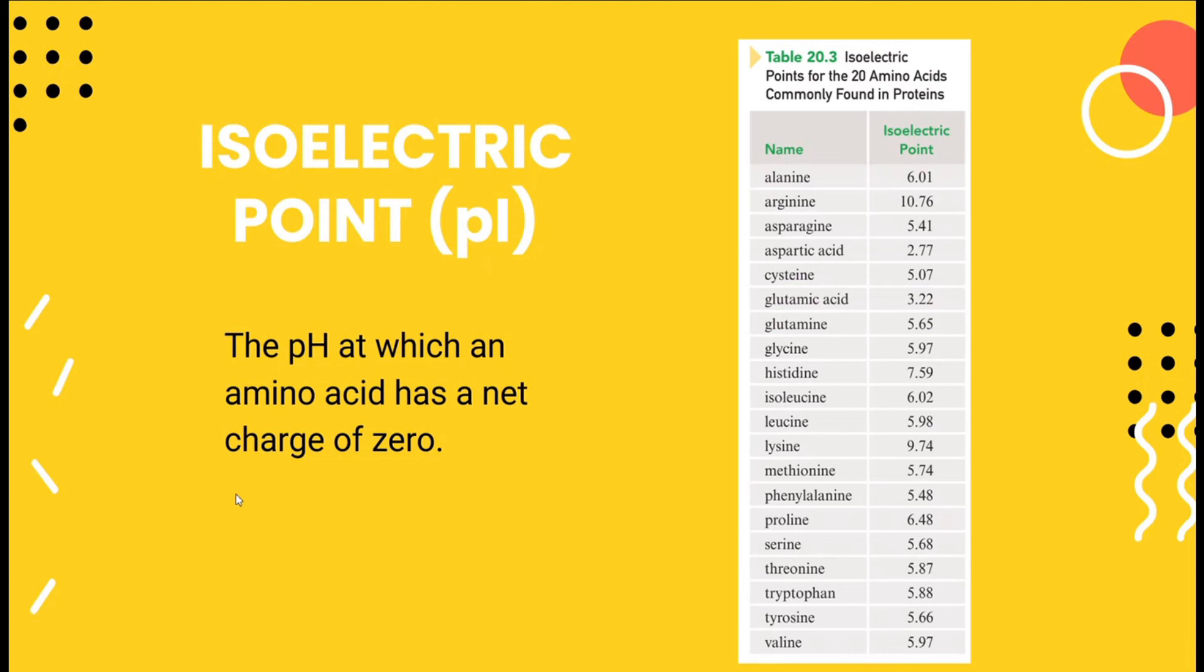The isoelectric point is the pH at which an amino acid has a net charge of zero. As you can see from the table on the right, these are the isoelectric points of the 20 amino acids commonly found in proteins.